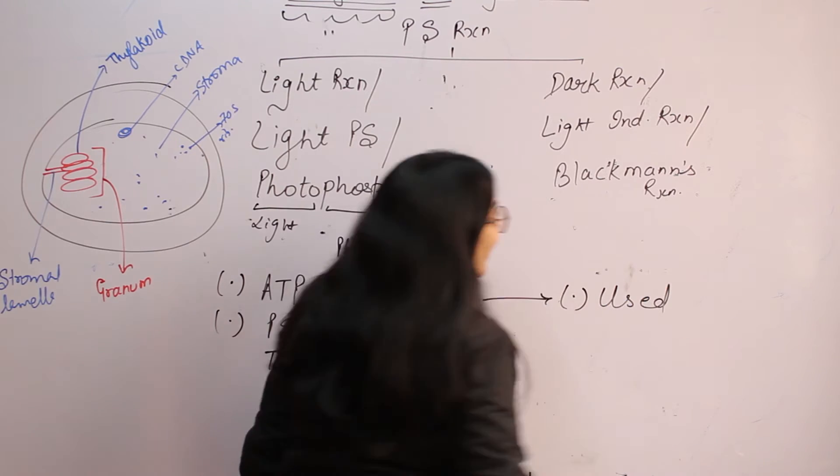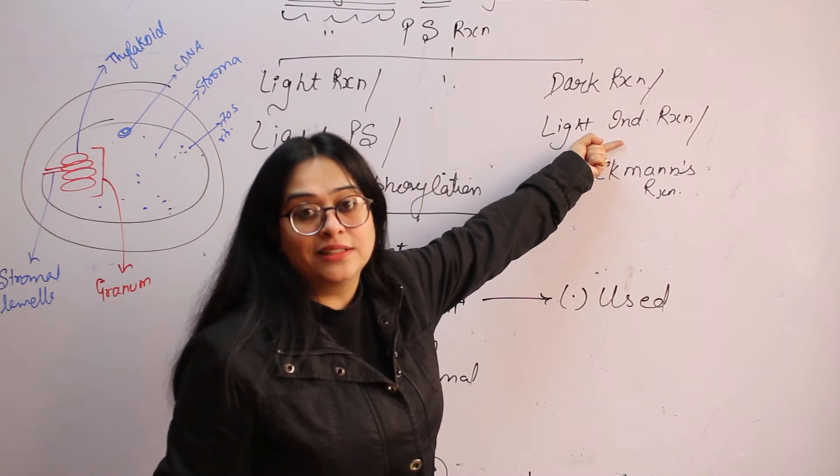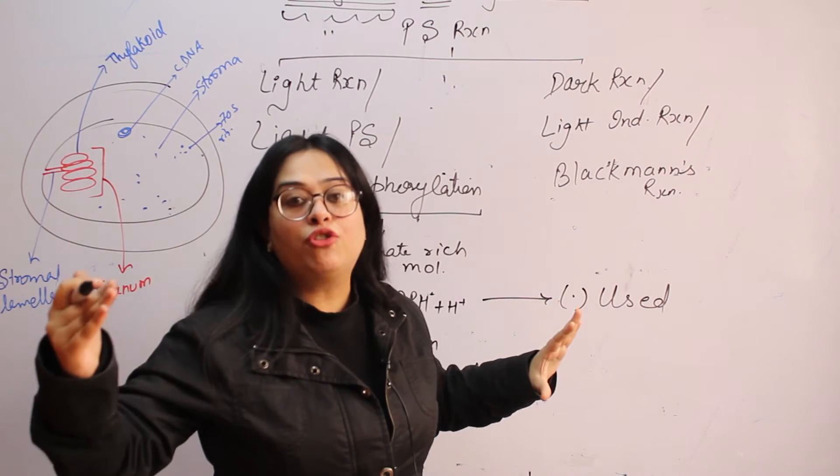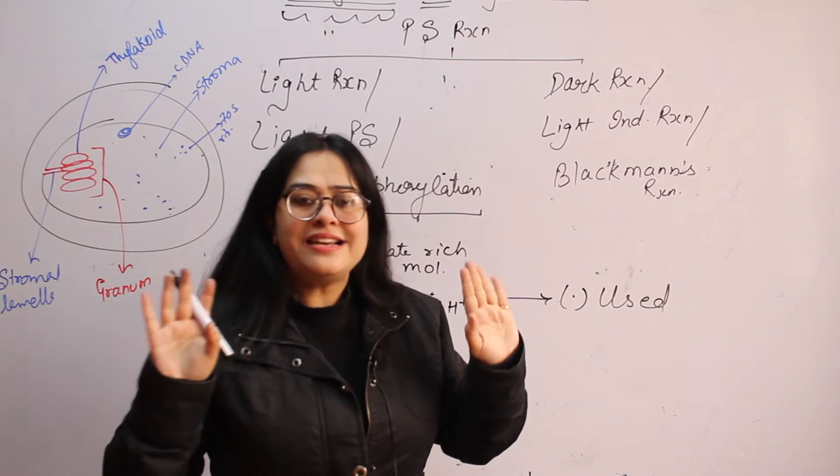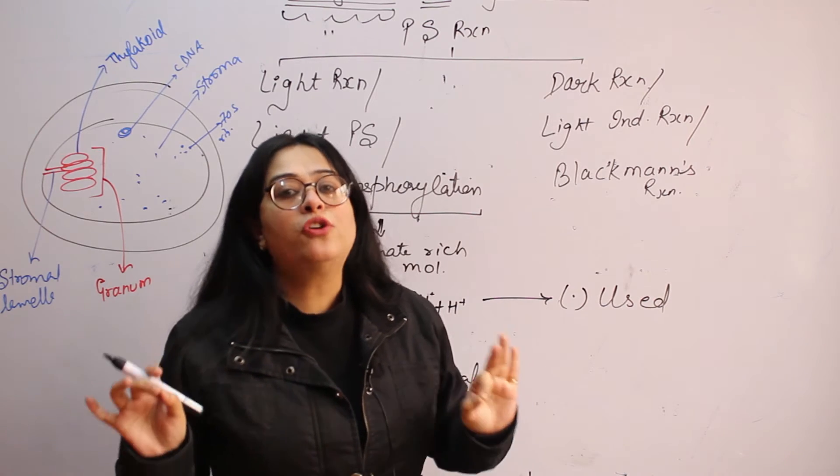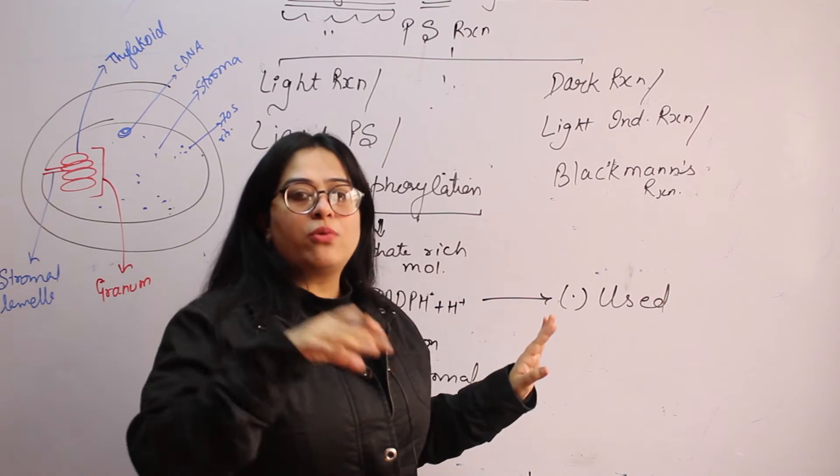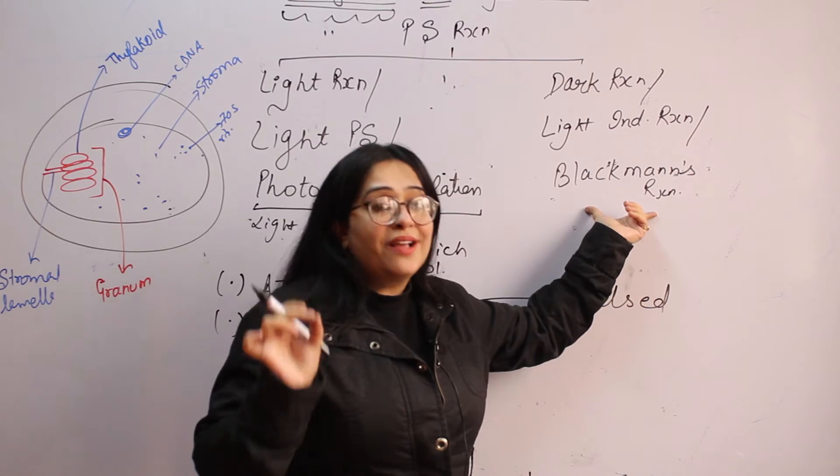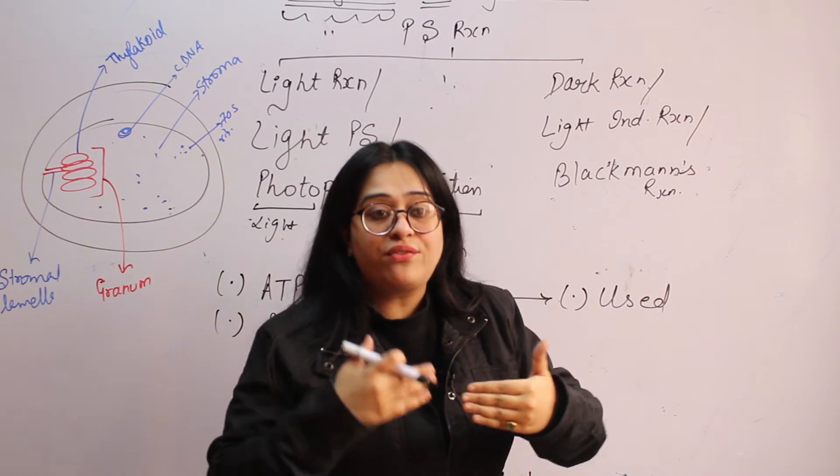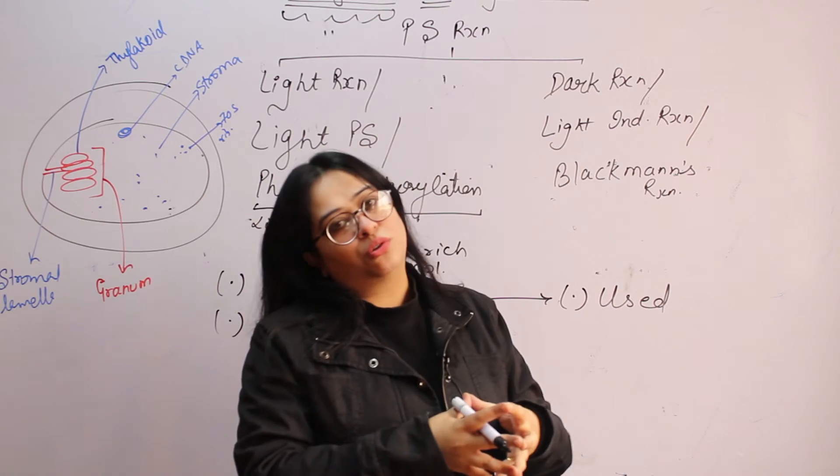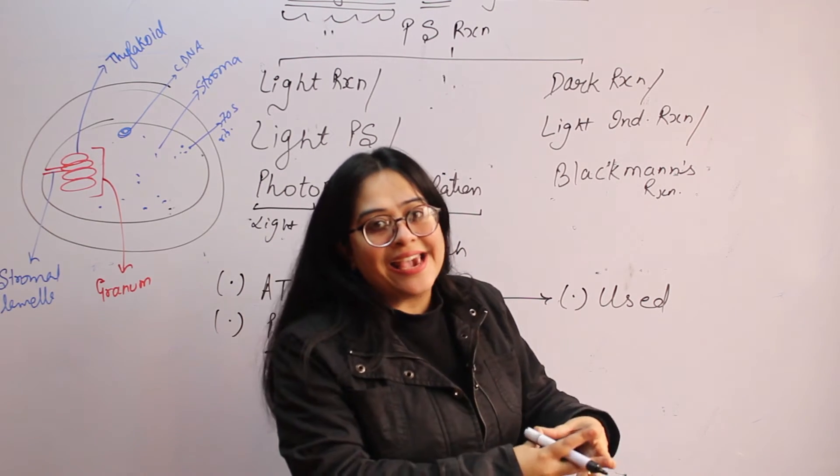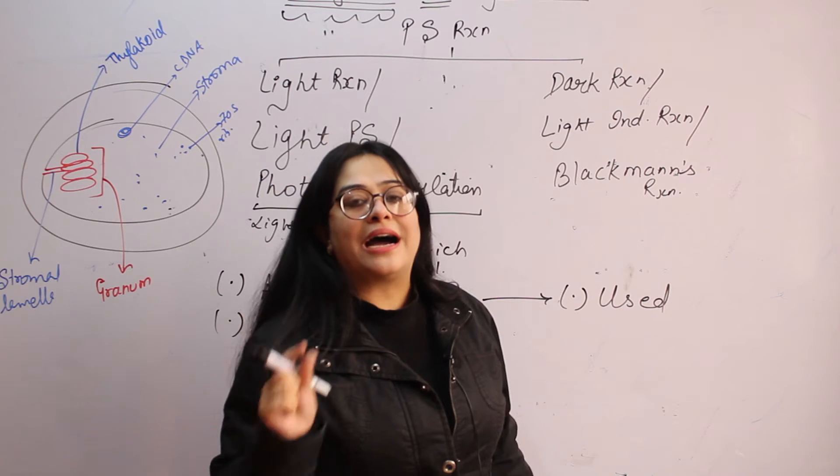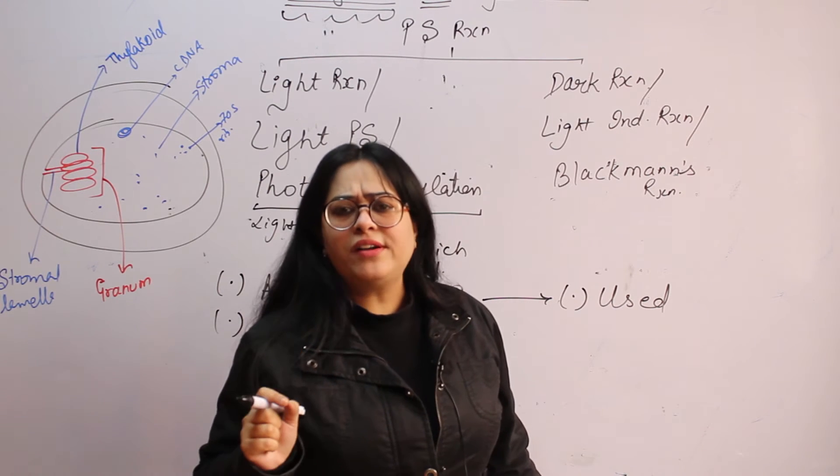This ATP and NADPH, both of these are going to be used in dark reaction or light independent reaction. Dark reaction doesn't mean that it is going to happen in night. No, it's not necessary that it will happen in night only. Dark means it is light independent, that it can happen irrespective of the fact whether light is present or not. It is not a light dependent reaction. So it's not always going to happen in dark only. No, it is a light independent reaction. Or Blackman reaction, we wrote here because Blackman was the scientist who actually was the first to postulate that there exists dark phase also.